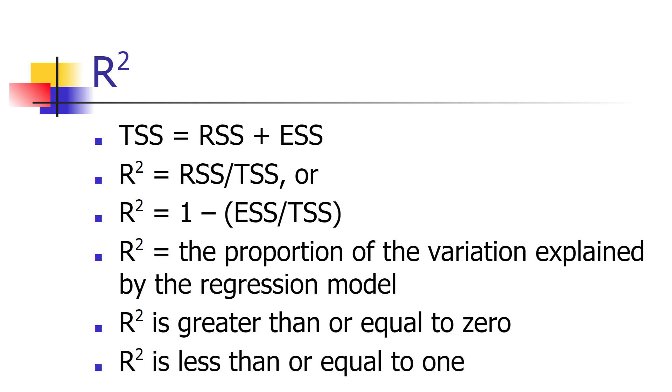If R-squared is equal to 0, it means the regression explains absolutely none of the variation in the dependent variable. And R-squared of 1 means that the regression equation accounts for all the variation in the dependent variable, and there are no error terms, so all the points would fit exactly along the regression equation.